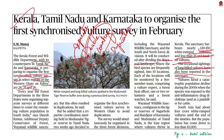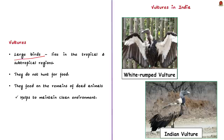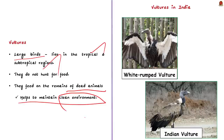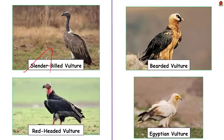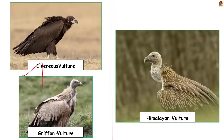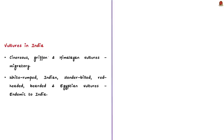Vultures are large birds living predominantly in tropical and subtropical regions. They do not hunt for food; instead, they feed on the remains of dead animals, thereby helping maintain a clean environment. A total of nine species of vultures are found in India: White-rumped Vulture, Indian Vulture, Slender-billed Vulture, Red-headed Vulture, Bearded Vulture, Egyptian Vulture, Cinereous Vulture, Griffon Vulture, and Himalayan Vulture. Of these nine species, the Cinereous Vulture, Griffon Vulture, and Himalayan Vulture are migratory, while the others are endemic to India.